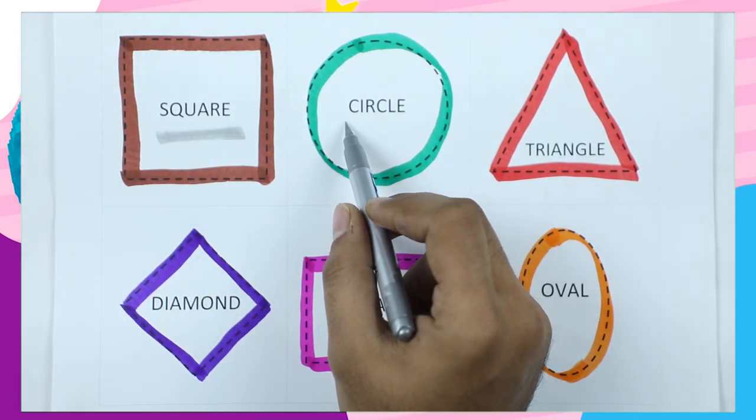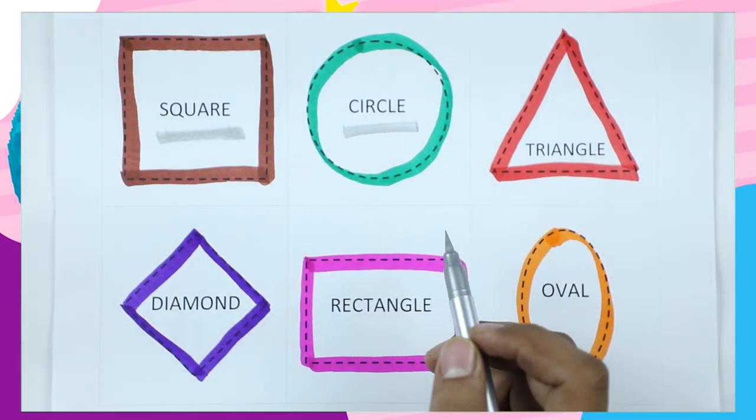Circle. C-I-R-C-L-E. It's a circle with green color.